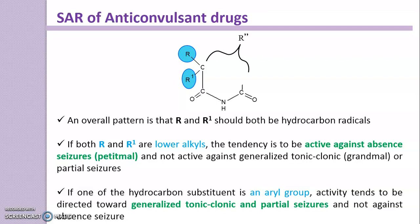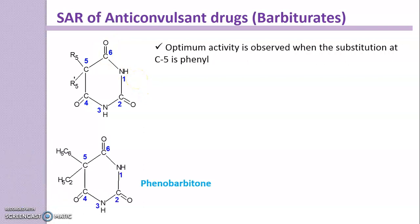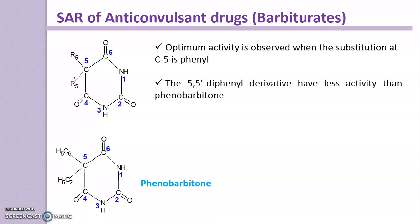The first individual category is barbiturates, where the bridging atom is C=O-NH. Optimum activity is observed when the substitution at carbon-5 includes a phenyl ring, as in the example of phenobarbitone, where one substituent is ethyl and one is a phenyl ring. This compound shows maximum activity. If both substituents at C5 are phenyl rings, the activity is less than that of phenobarbitone.